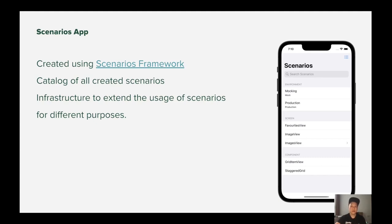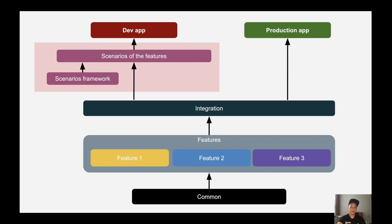To support delivering the scenarios easily, an open source framework is created to help create a development app easily, automatically generating UI to display all scenarios, and extending the usage of scenarios for different purposes such as unit tests or UI tests. But the last thing you want is to accidentally ship all those scenarios into production. Separation between the development and production apps into separate targets is therefore recommended, and the code used to support development is linked only to the development version of the app.